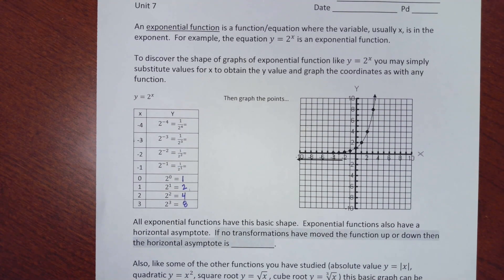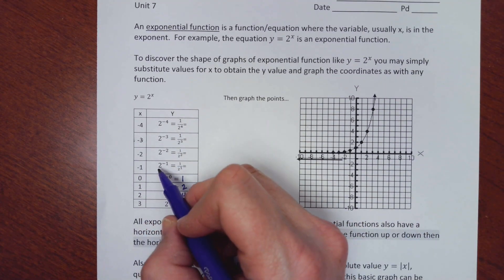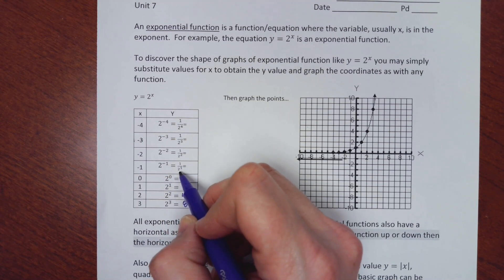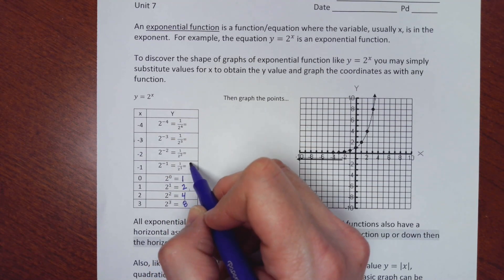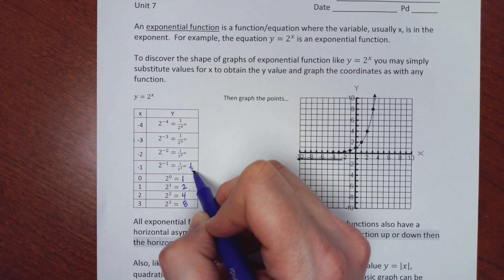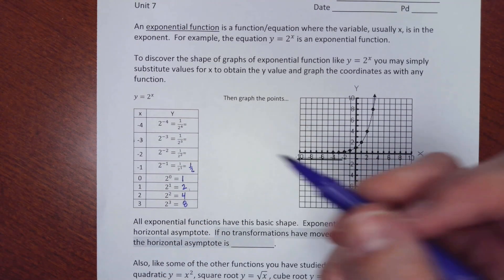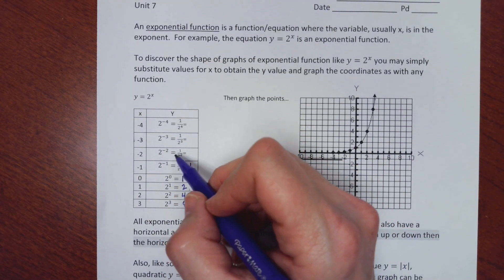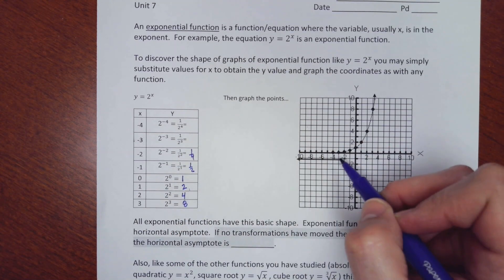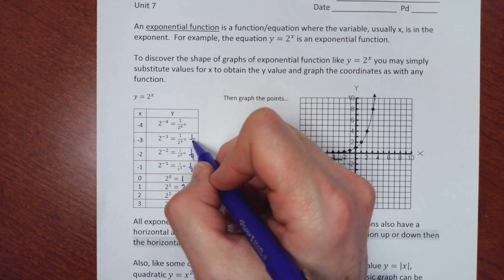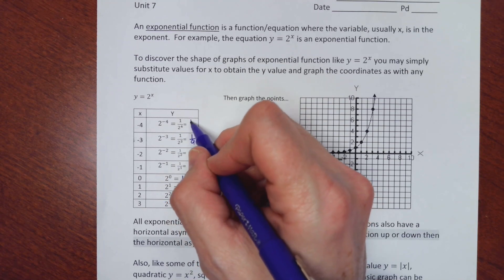If you go backwards with negative exponents: 2^(-1) — remember a negative exponent moves it to the bottom — so that's 1 over 2, which is one-half. So you get the point (-1, 1/2). Then 2^(-2) is 1 over 2 squared, so that's one-fourth. It gets lower and lower — one-ninth, then one-sixteenth.